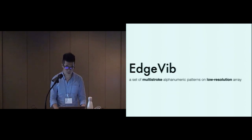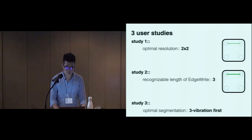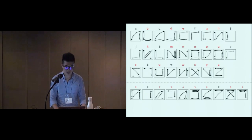Above discussion leads to the research problem. How do we effectively display alphanumeric characters on the wrist? So, we present EdgeVibe, a set of multi-stroke patterns for a low resolution 2x2 array. Through a series of user studies, we conclude the guidelines of dividing EdgeVibe patterns into multi-strokes for displaying letters and digits effectively.